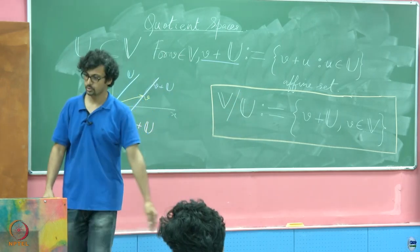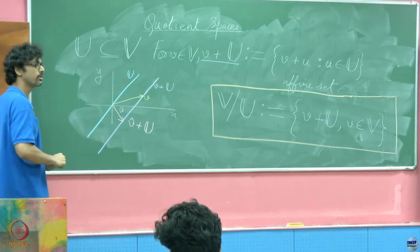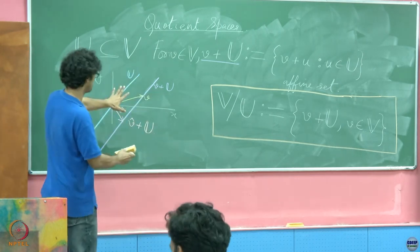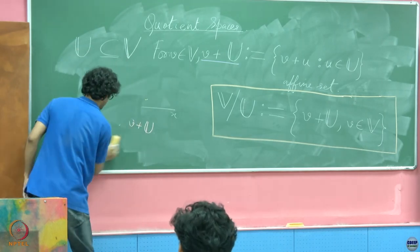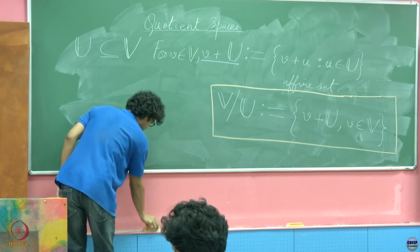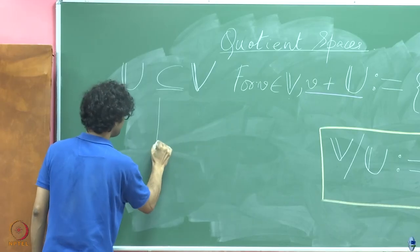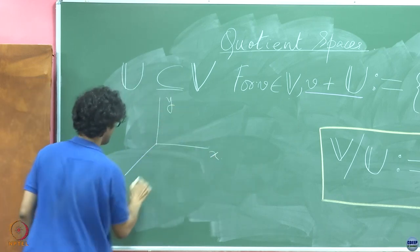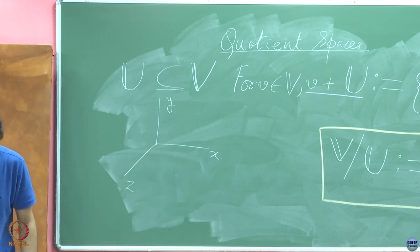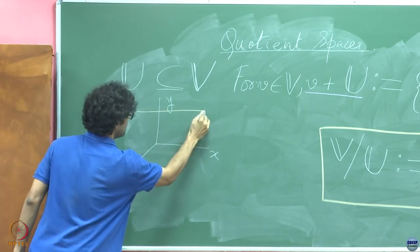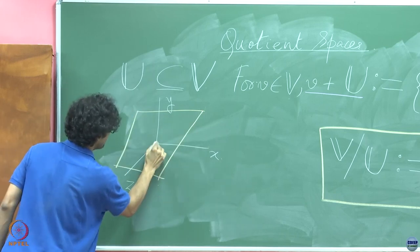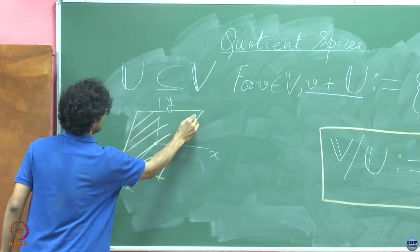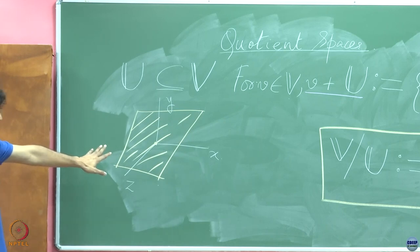Now imagine what we are trying to deal with here is an object defined like so, which is now a collection of what exactly? V plus U for all possible V's that you choose from the vector space V. V/U, this is the object we are interested in.